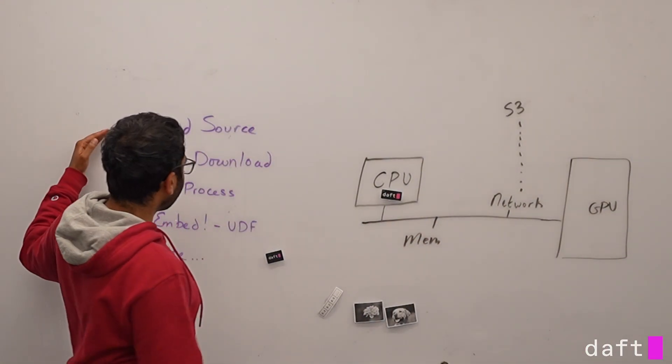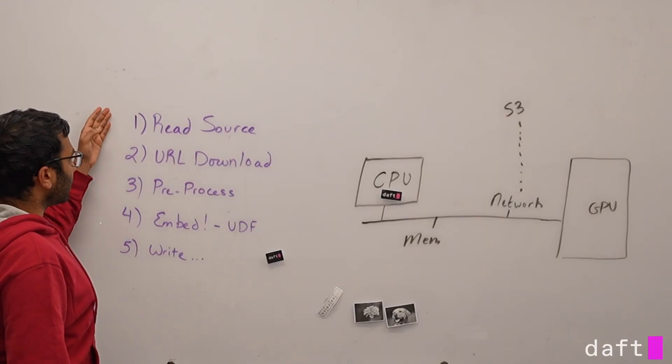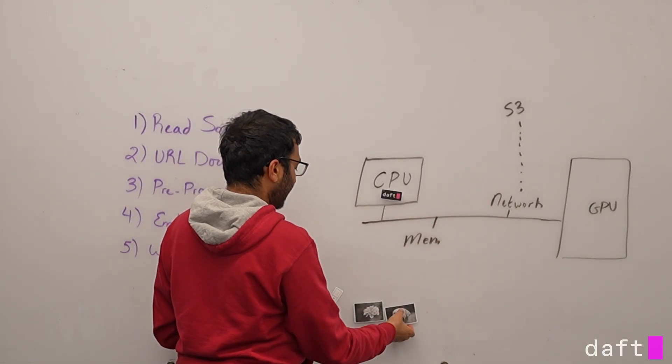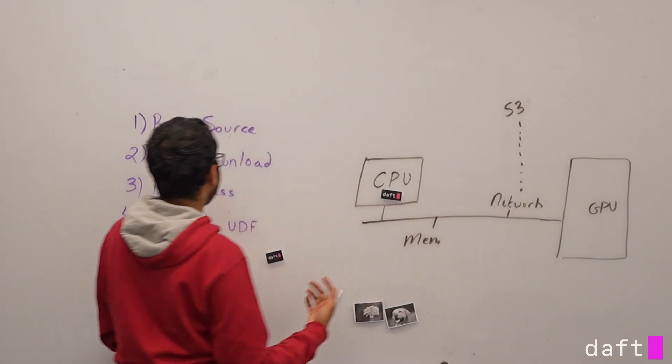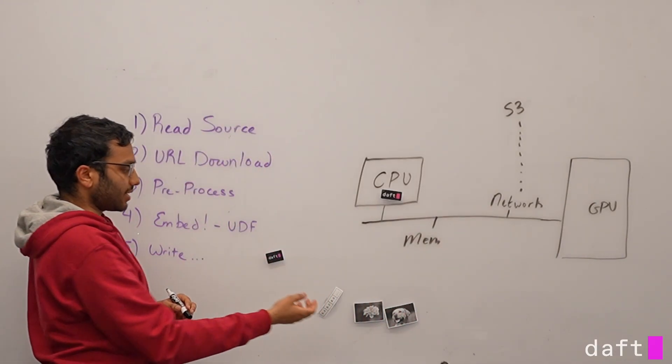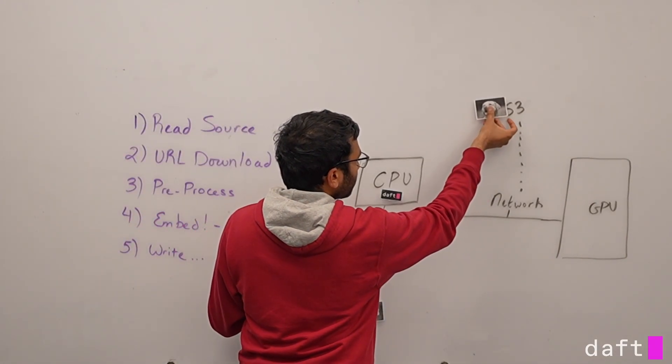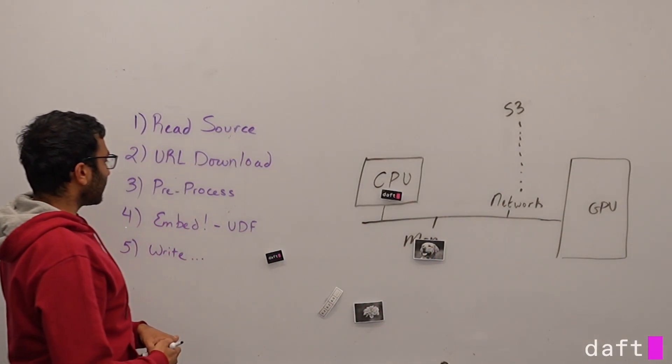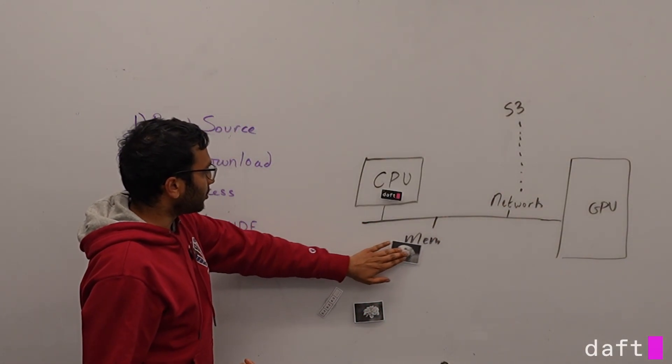When we're running through these first couple of steps, let's say like read source, DAFT is sending a request through the network to get some metadata. With URL download, it's doing the same thing. It's loading from probably S3 your image and saving that into memory. Then it does pre-processing between memory and the CPU.